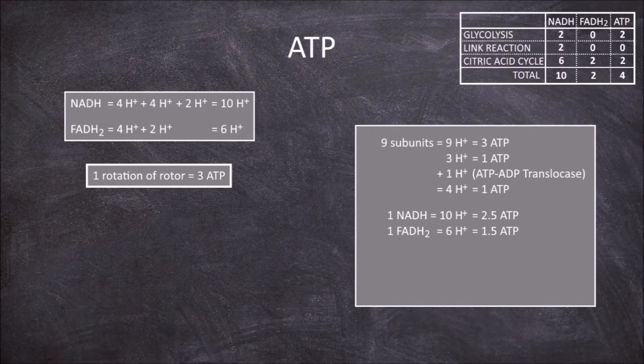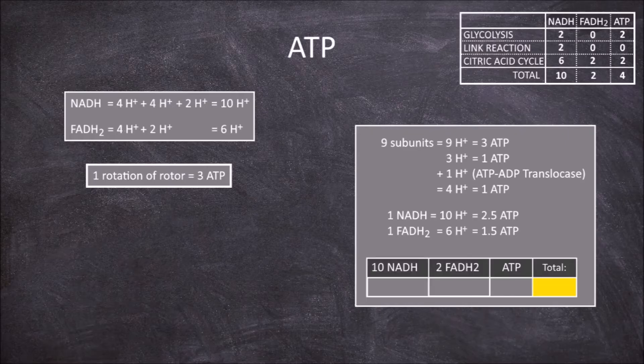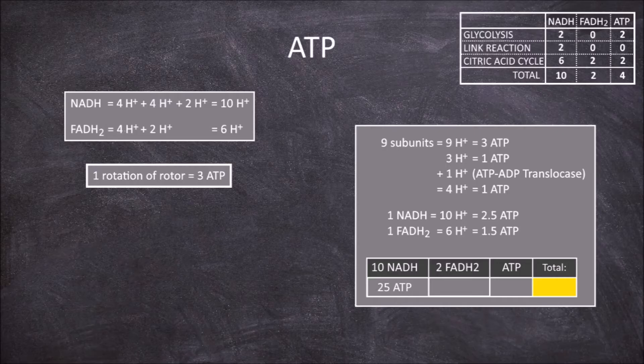So for 10 molecules of NADH you would get 25 ATP, and 2 molecules of FADH2 would give you 3 ATP.